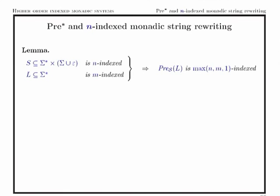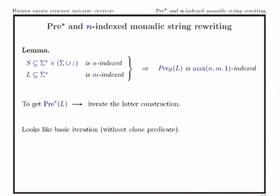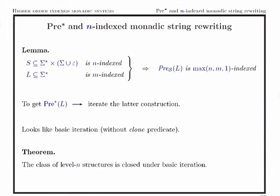It is easy to see that in this situation, using an n-indexed string rewriting system and an m-index language, we get a pre-image at level max(n, m) — possibly plus one, since applying zero for both n and m already leads to context-free languages. If we want to rewrite repeatedly, we have to iterate this construction. Looking at this iteration, it resembles basic iteration — we don't need the clone predicate here. The class of level n structures is closed under basic iteration, which is very different from full iteration which causes climbing in the hierarchy; here we stay at the same level.